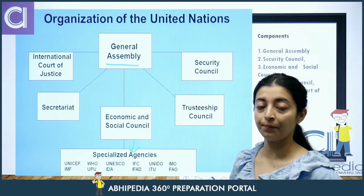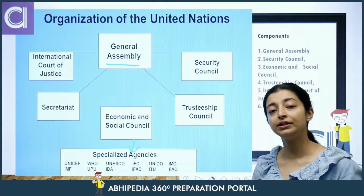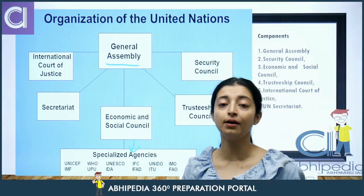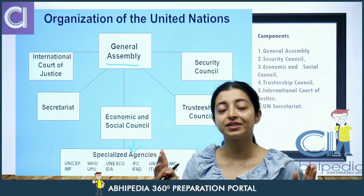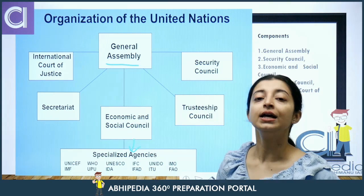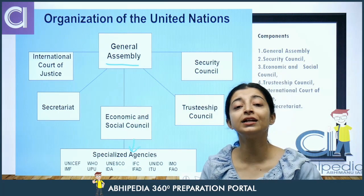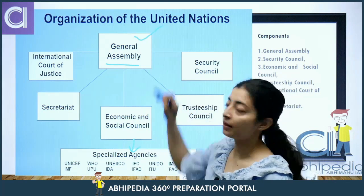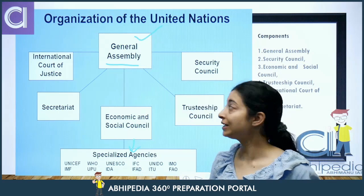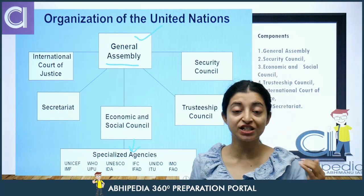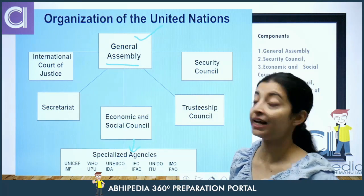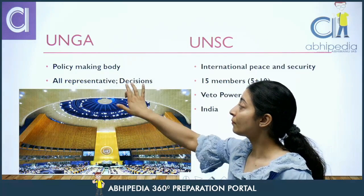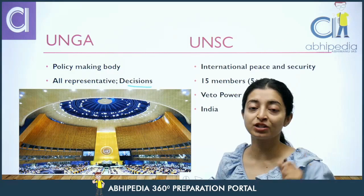Let's talk about the General Assembly. The General Assembly is the all-representative or universal-representation body of the UN — it has representation from all members. The main policy-making decisions of the United Nations are made here — policies are drafted here. These decisions are taken on the basis of simple and special majority.